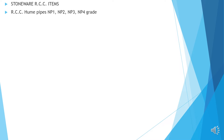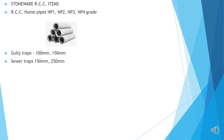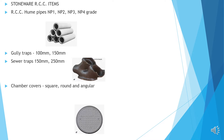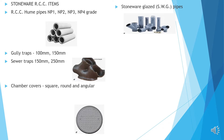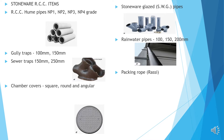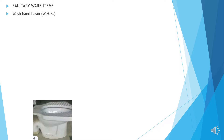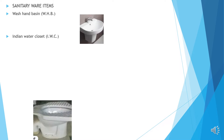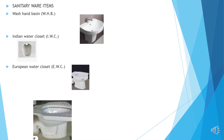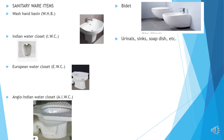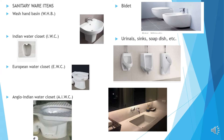Stoneware and RCC items: RCC hume pipes ranging from NP-1 to NP-4 grade, gully traps 150 mm, shiver traps, chamber covers — square, round and angular, stoneware pipes, rainwater pipes ranging from 100 to 200 mm, packing rope. Sanitary ware items: wash and wash basin, Indian water closet, European water closet, Anglo-Indian water closet, bidet, urinals, sinks, soap dish, etc.